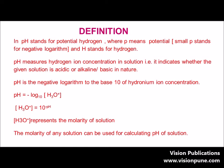We know that water dissociates to give hydrogen and hydroxyl ions. Some of these hydrogen ions re-associate with water to form hydronium ion H3O+. So we can define pH as the negative logarithm of hydronium ion concentration to the base 10, or the negative logarithm of hydrogen ion concentration to the base 10. So pH represents the concentration of hydronium ion.